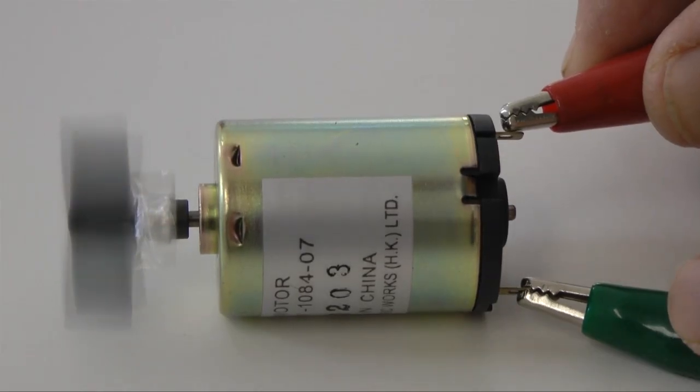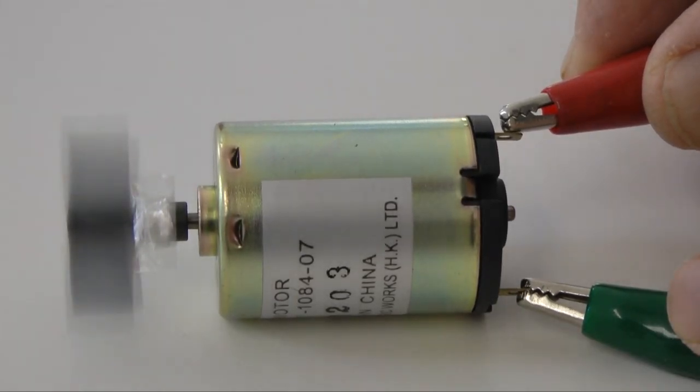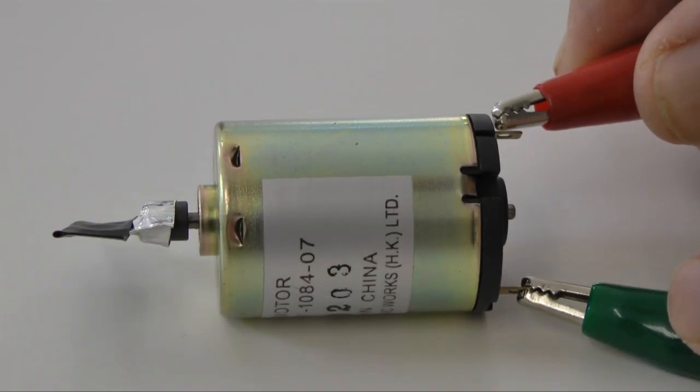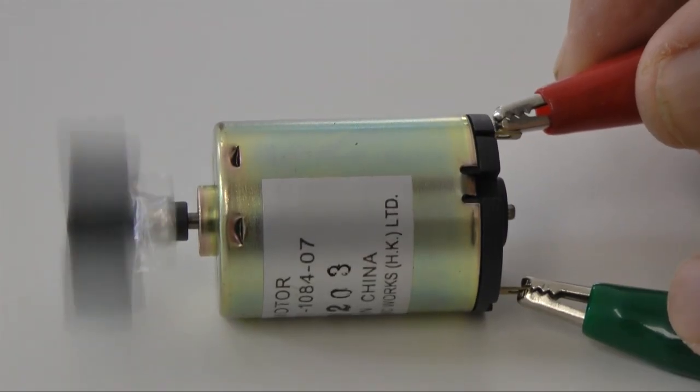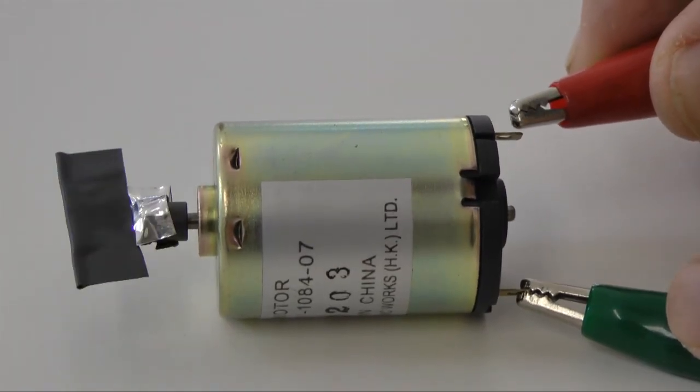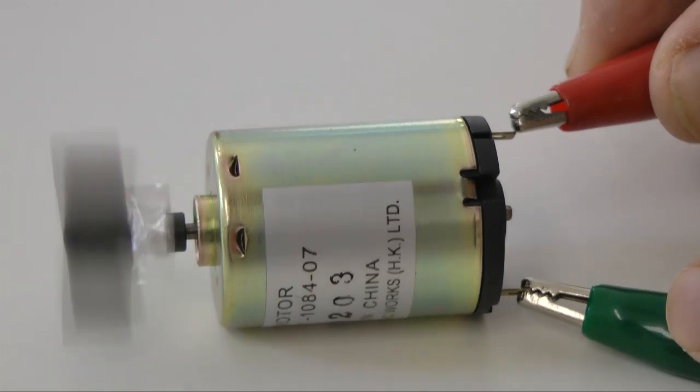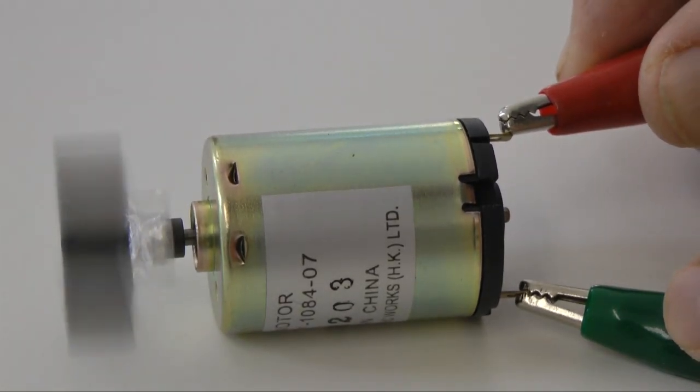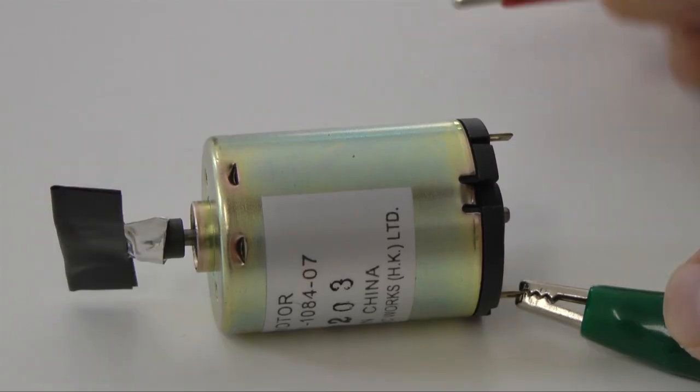This is a commercially made DC motor. It is significantly more powerful and efficient than our simple motor. It accomplishes this with strong permanent magnets and large coils wound on an armature, and a method for controlling the polarity of the coil's magnetic field.